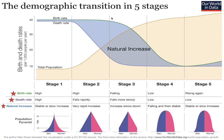As we get into stage three, that birth rate starts to drop. So women are getting more opportunities here — there's more access to family planning tools, contraception, education about those things. And that death rate continues to drop, but it falls a little bit more slowly. Because of that, this natural increase slows down a little bit, but you can see there's still a big natural increase happening — it's just not as rapid as stage two.